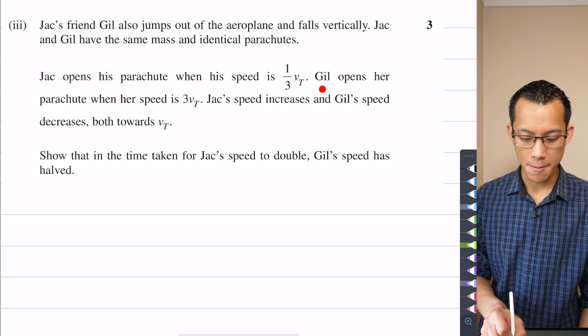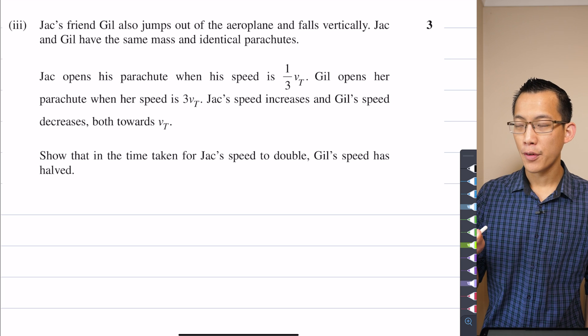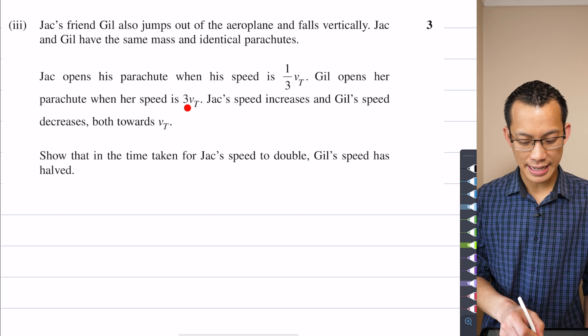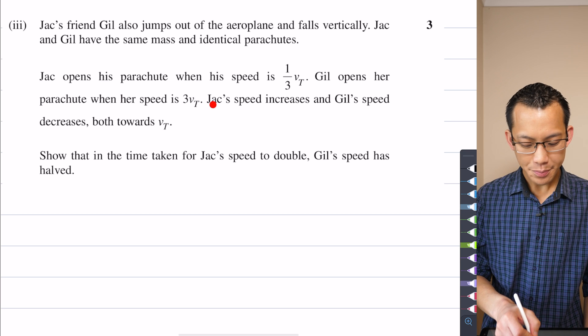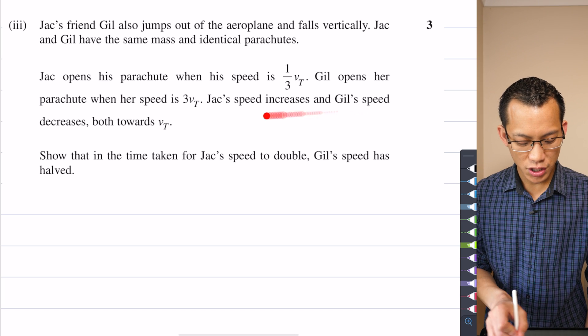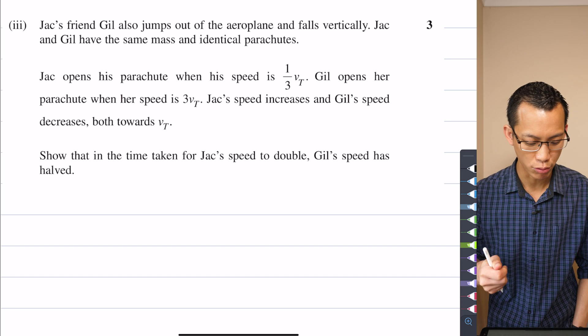but Jill waits longer, waits until she speeds up and her terminal velocity with the parachute, while she hasn't opened a parachute, it gets to triple of that velocity. Jack's speed increases because he hasn't reached it yet, but Jill's speed decreases to bring herself down. She's slowing down after she's pulled the parachute.